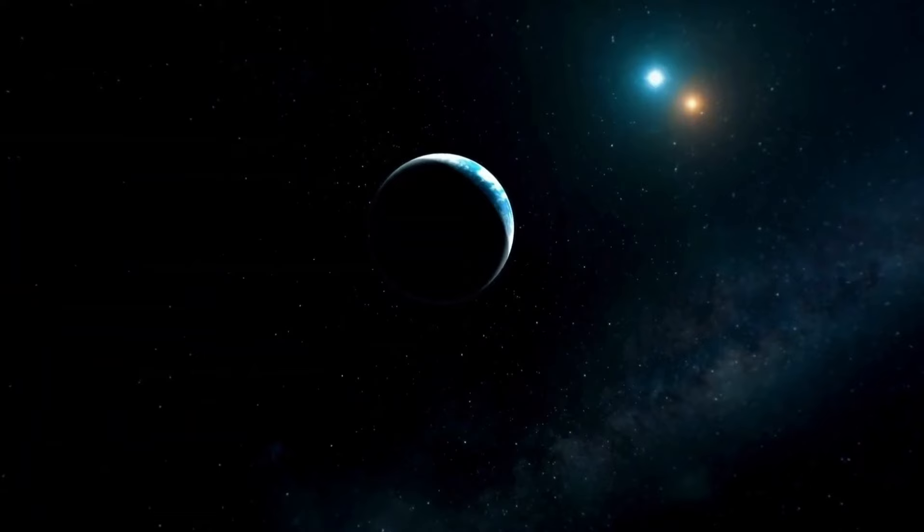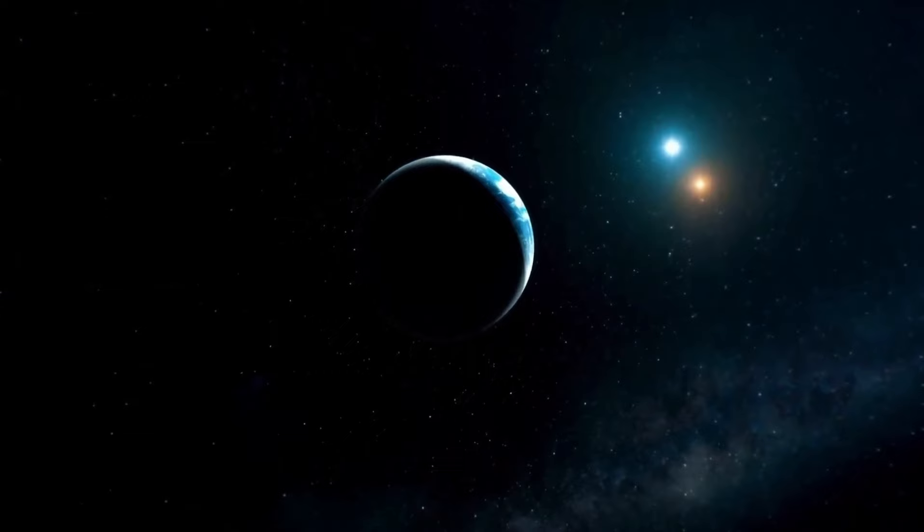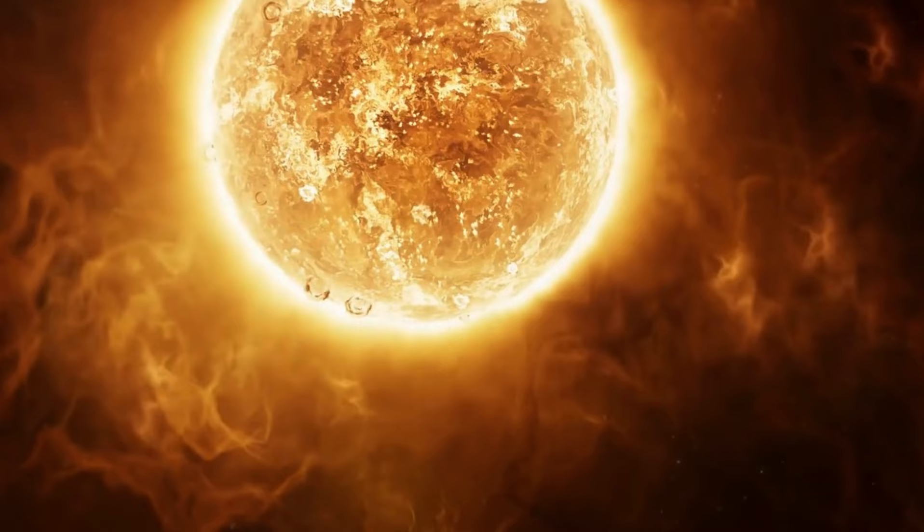In this image from James Webb, the A, B, C, and F rings are all visible, as well as the Cassini division and the NT gap. Saturn was the final gas giant planet in our solar system imaged by James Webb, completing our solar system's family portrait.